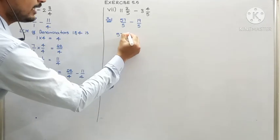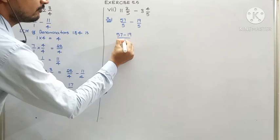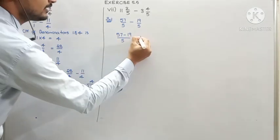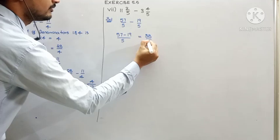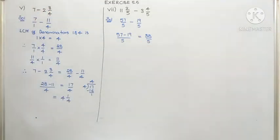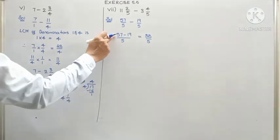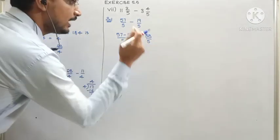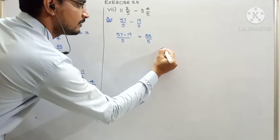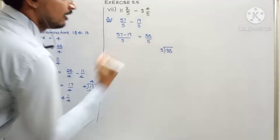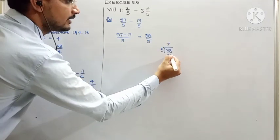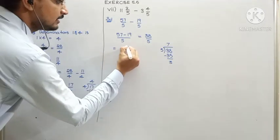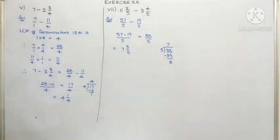So 57 minus 19, divided by 5. 17 minus 9 gives us 8, and as we borrowed from 5, 4 minus 1 gives us 3 — so that is equal to 38 by 5. We also have a chance of converting it into a mixed fraction: 5 times 7 is 35, 38 minus 35 gives us 3 as the remainder, hence the answer is 7 and 3 by 5.